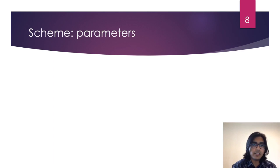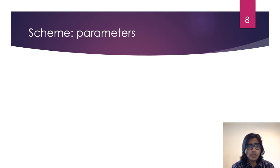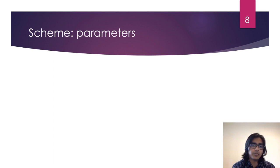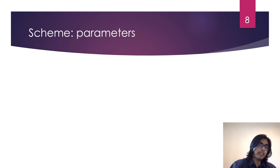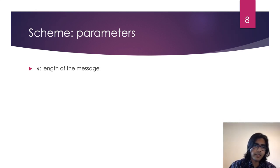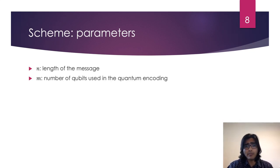Now I will begin discussing the content of the scheme. I would like to start by giving a rundown of a more basic version of the scheme, as the full version is a little bit complicated. After this, I will discuss the general approach followed in the proof, and then error tolerance. But before we detail the scheme, let's discuss some parameters. We let N be the length of the message, and we let M be the total number of qubits sent from Alice to Bob.